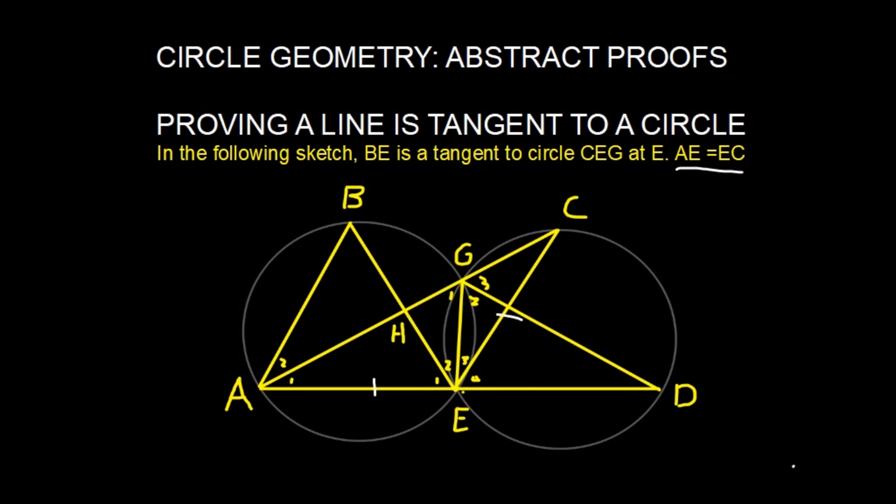AE equals EC, and immediately we can see, because of that, A1 would equal angle C. Now, before we get to the questions that will be aimed at this diagram, and specifically proving a tangent, we need to start with our roadmap.